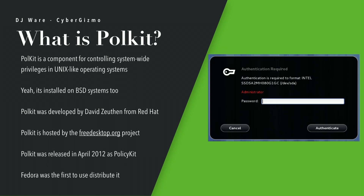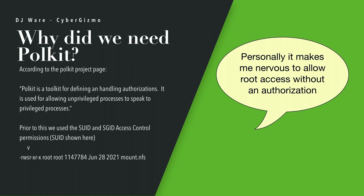It was first released as PolicyKit in May 2009, then they changed the name in 2012. Fedora was the first to distribute it, and then other distributions followed suit. What it's really meant for is — when you're executing in a privileged mode in a graphical user interface — it's supposed to stop and prompt you before allowing you to execute. It is a toolkit for handling authorizations, used for allowing unprivileged processes to speak with privileged ones.